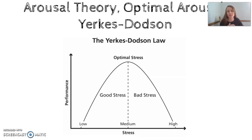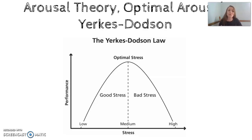For some people, their optimal arousal is a roller coaster — you want to ride it for that thrill — but bungee jumping might be too much arousal. So optimal arousal means you're motivated to seek an optimal amount of sensation or thrill, not too little and not too much.